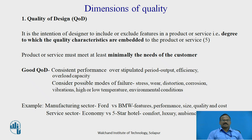The first dimension is Quality of Design. It is the intention of the designer to include or exclude features in a product or service — that is, the degree to which quality characteristics are embedded in the product or service at the design stage. What the customer is demanding has to be included in these quality characteristics. There are certain quality characteristics which are technological, for example strength, temperature, viscosity, pressure. There are certain quality characteristics like contractual, that is guarantee and warranty. There are certain quality characteristics which are time-oriented, that is reliability and maintainability. These quality characteristics are to be achieved at the design stage — that is called quality of design. The product or service must at least minimally meet the needs of the customer.